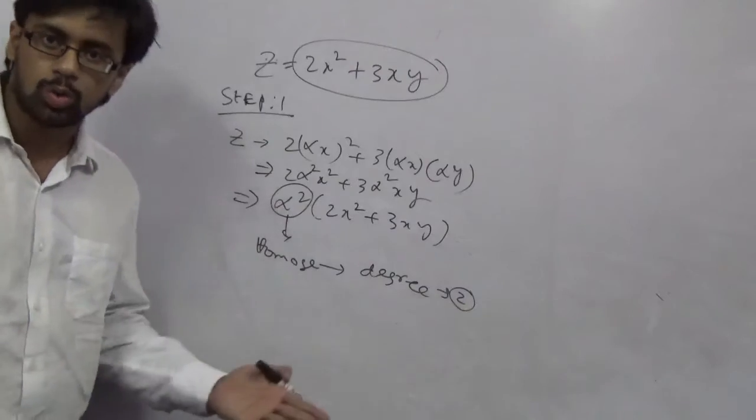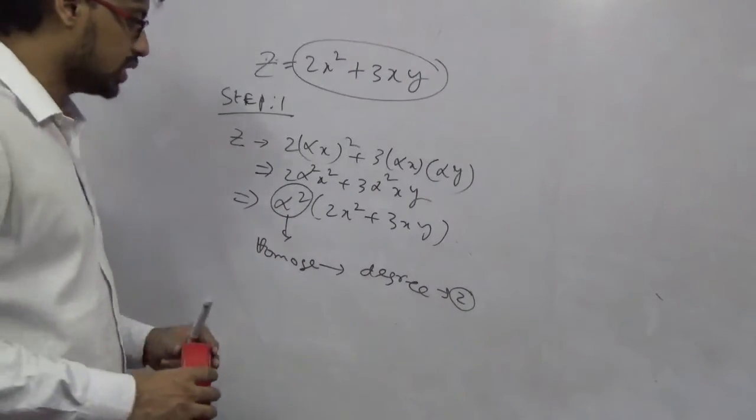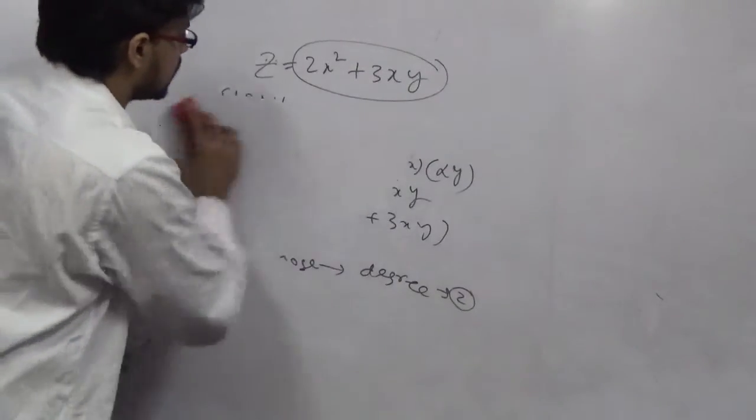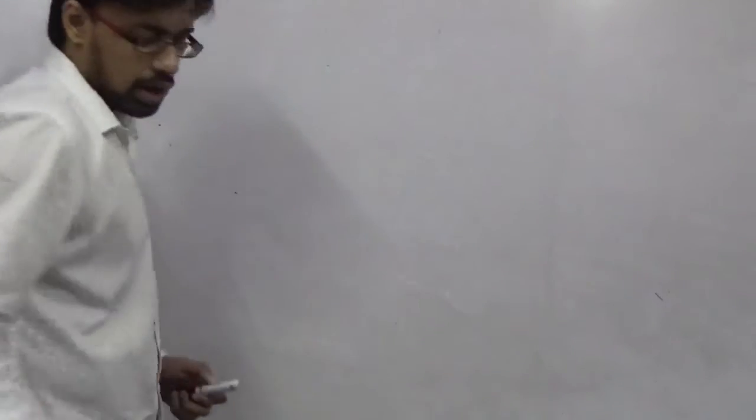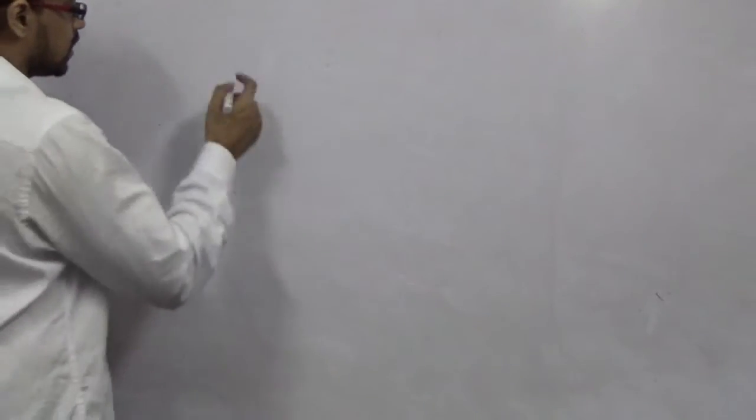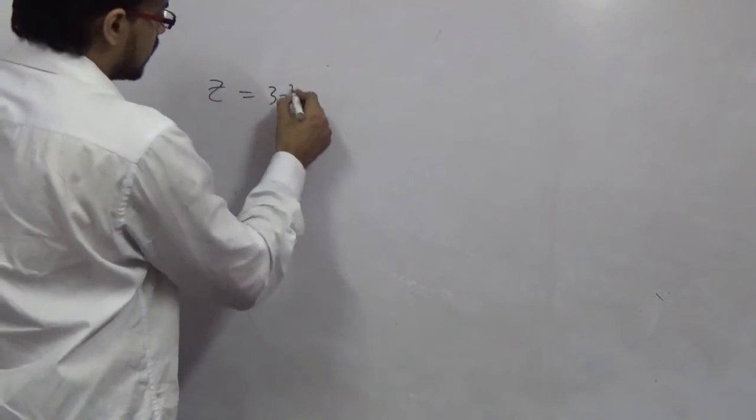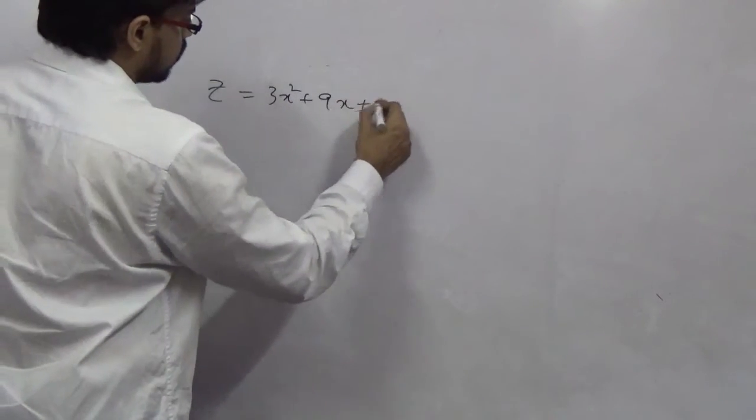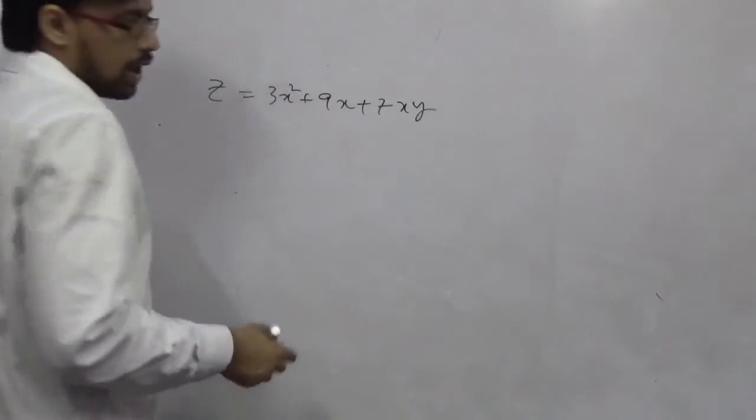Now how to check it is not homogeneous? What happens if it is not homogeneous? Now there is again an example of non-homogeneous pattern. A non-homogeneous equation is, for example, z equal to 3x squared plus 9x plus 7xy.